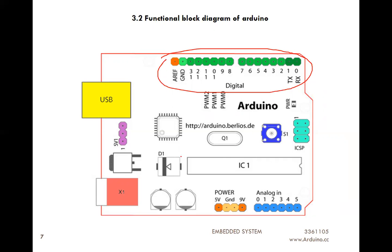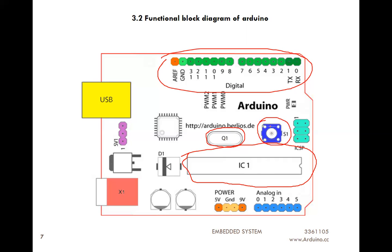This is the main controller. There are three microcontrollers used here: ATmega8, ATmega168, and ATmega328. ATmega328 means 32 kilobyte memory and 8 kilobyte CPU on-chip. Q1 is a crystal — the operating frequency required for the microcontroller is 16 MHz. Switch S1 is used to reset the microcontroller. You can connect the computer through the USB port.